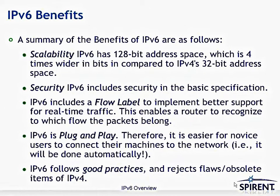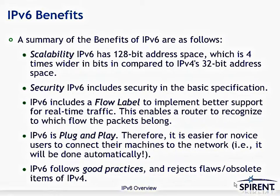Some of the benefits of IPv6: there's improved scalability with a large address space, built-in security, and improved QoS behavior. There are stateful QoS possibilities using a flow label, similar to the way MPLS works with label forwarding. IPv6 is plug-and-play by nature — it has two levels of auto-configuration: stateful and stateless. And it follows all the good practices while rejecting the flaws and obsolete items of IPv4.